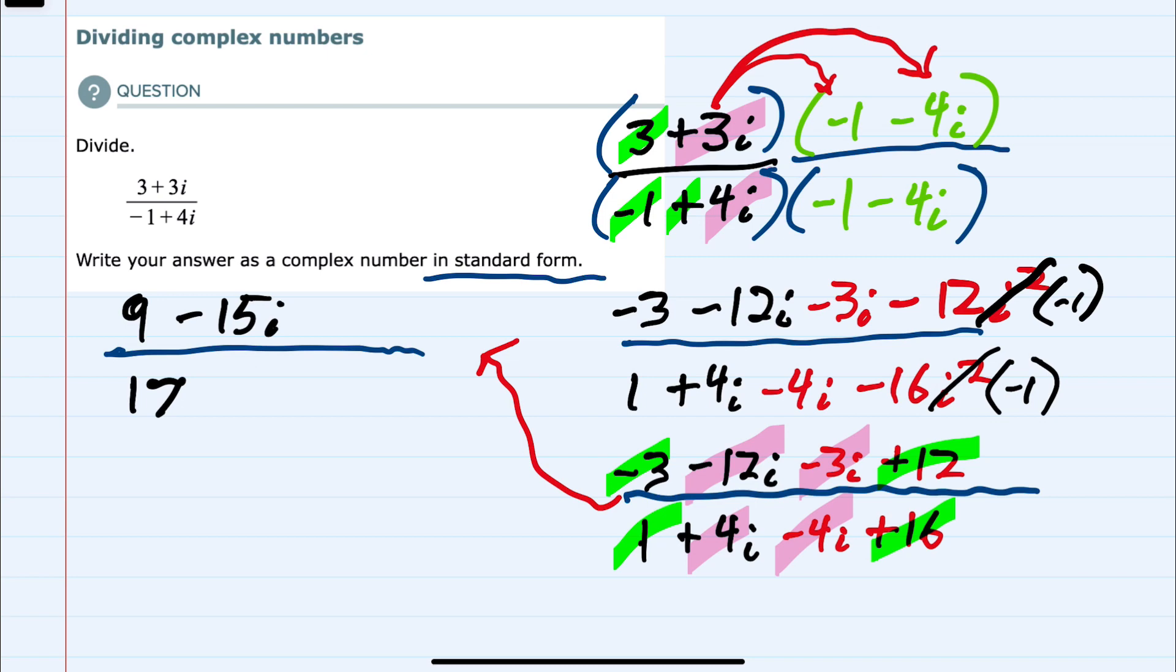And that is the reason that we chose the conjugate to multiply. Because whenever you multiply by the conjugate here, where one is plus and the other is minus, that ensures that these middle terms will cancel. And since they have canceled, I no longer have the i portion in the denominator.